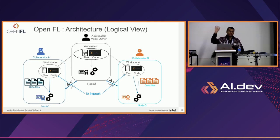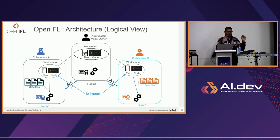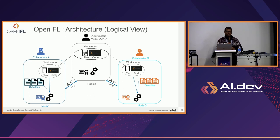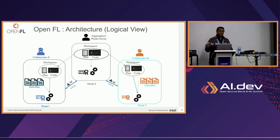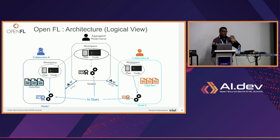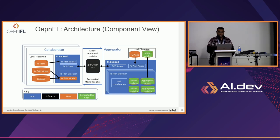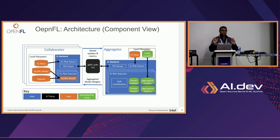The aggregator — the model owner — defines the model in the plan, specifies network connections and which collaborators will participate, sends it, and fx import brings the whole environment into the collaborator institutions. The aggregator also serves as the certificate authority, specifying which collaborators can connect, establishing a mutual TLS secure connection. Once this is all set up, you run one single command — fx start — and the experiment begins.